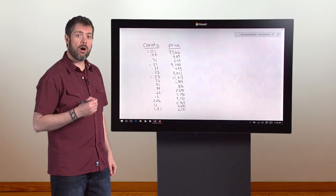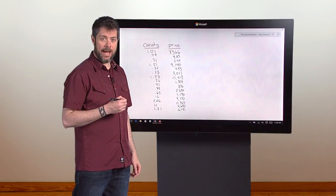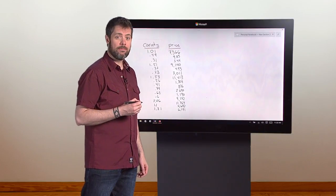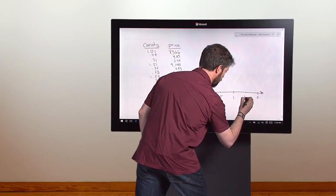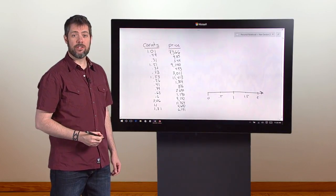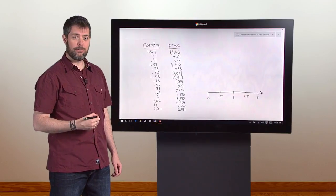The first thing we'll do is draw a horizontal number line called an axis to chart the weights. The range of the weights is 0 to 2. So we'll draw a line that covers that range and put ticks for each half carat.